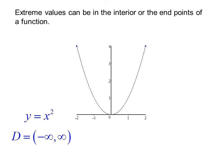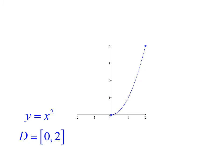Extreme values can be in the interior or at the end points of a function. For example, with y equals x squared where the domain goes from negative infinity to positive infinity, we have an absolute minimum at (0, 0) but no absolute maximum — the function just keeps increasing. If we change the domain to the closed interval from 0 to 2, we see an absolute minimum value of 0 and an absolute maximum value of 4. In this case, the global minimums and maximums are at the end points.